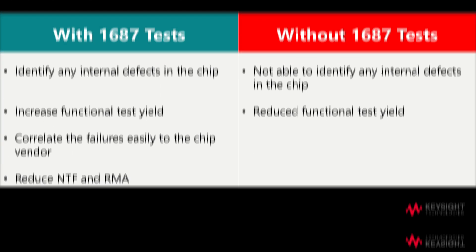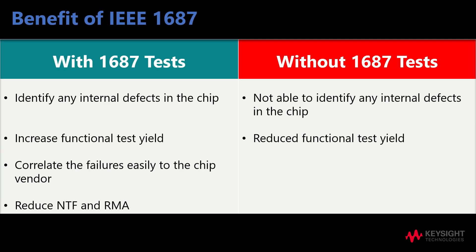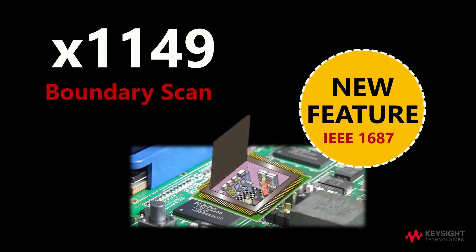In summary, running the 1687 test can help to identify any internal defects in the chips, increase functional test yield, correlate the failures easily to the chip vendor, and reduce NTF and RMA. Hence, with the new feature of IEEE 1687, boundary scan allows structural testing to take place not just on printed circuit boards, but also on IP blocks of a silicon chip.